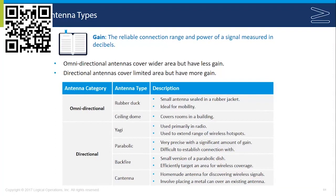Omnidirectional antennas cover a wider area but don't have a lot of gain — they send signals in all directions. Directional antennas cover a limited area but with more gain. Gain is simply the reliable connection range; the power of the signal is measured in decibels, so the higher the gain, the stronger the signal.